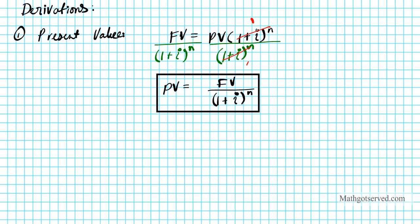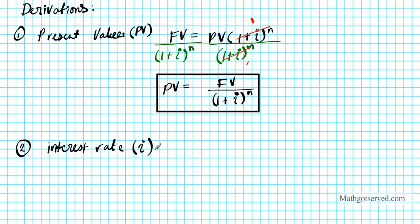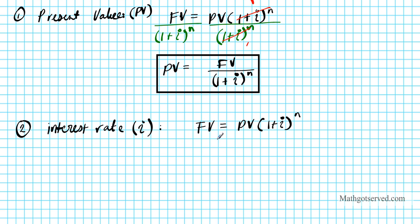Derivation number 2 is for the interest rate i. I want to find an explicit formula for i from the future value formula. Let's start with the original formula: future value equals present value times 1 plus i to the n. The goal is to isolate i, which will be our interest rate.